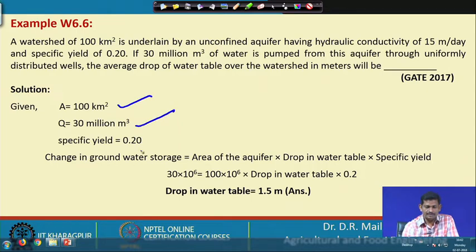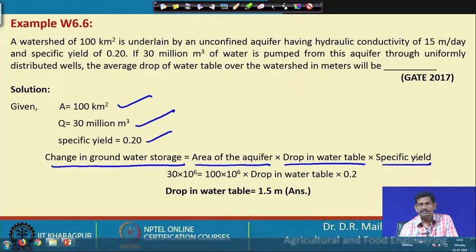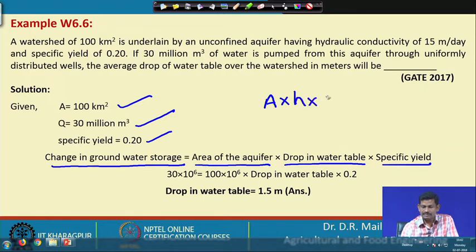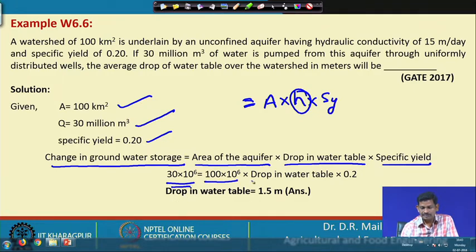Area is given, Q is given, specific yield is given. The change in groundwater storage equals area × drop in water table × specific yield. Change in water storage is 30 million m³; area and specific yield are known. Solving for the drop, you get 1.5 metres.